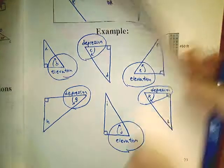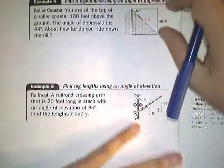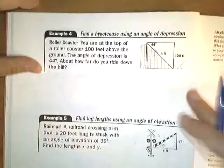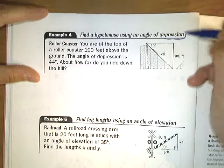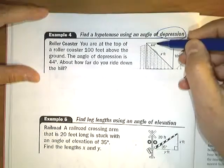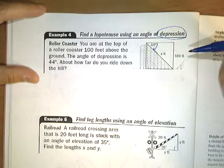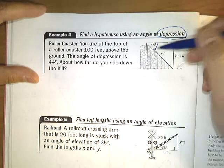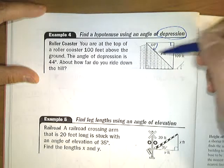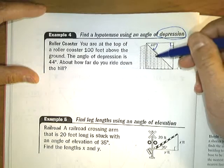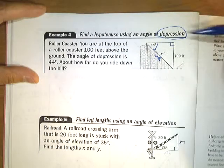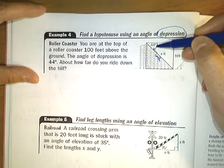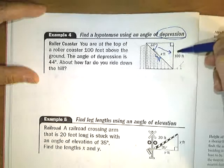Let's use these concepts for a few examples. This example uses an angle of depression — it starts at a horizontal and rotates down 44 degrees. They want to know how long a certain side is. This forms a right triangle where one length is the hypotenuse. Since our reference angle is up top, the other known side is the opposite side.